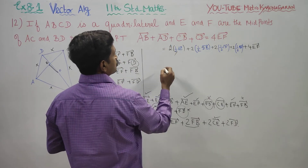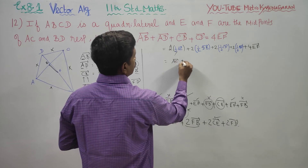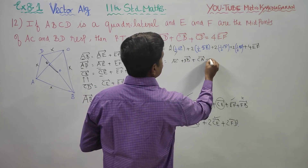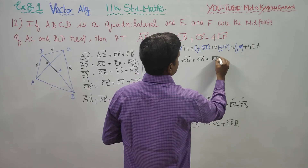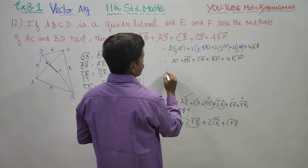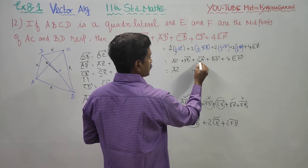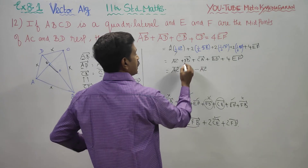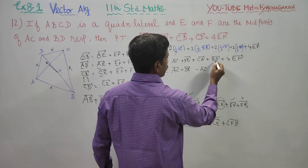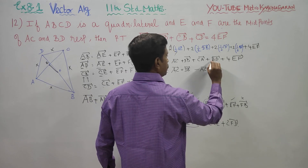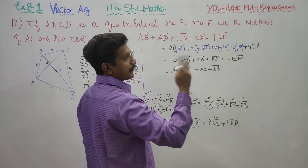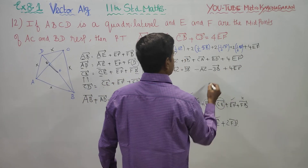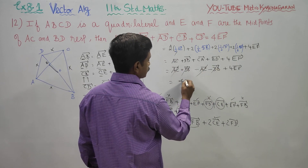Now you can cancel: two times AC and two times CA cancel each other. Two times DB and two times BD cancel each other since reversing a vector changes its sign to the opposite direction. Therefore, after cancellation, plus 4EF vector remains. AC and CA cancel; DB and BD cancel.